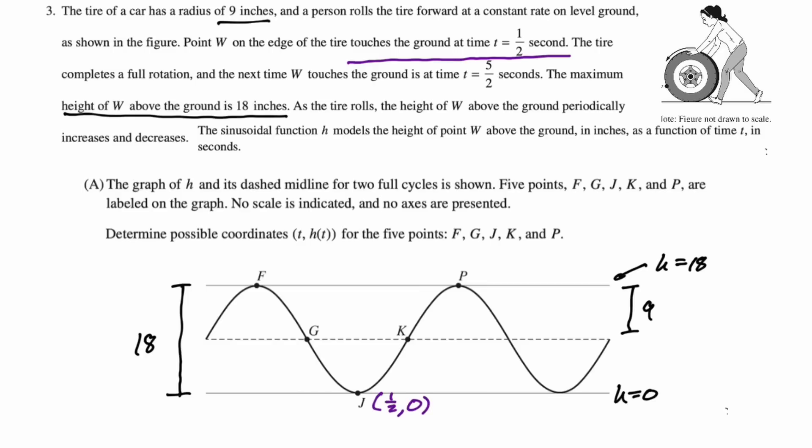Since we're on the ground at one half, I'm just labeling that point J as (1/2, 0). I'm okay with it. I don't think it's a bad thing to do. So we're starting with that. And then at five halves, you're on the ground again, which means that the total period is five halves minus one half, which is two.